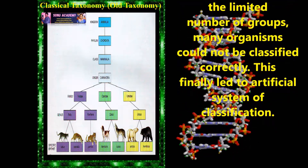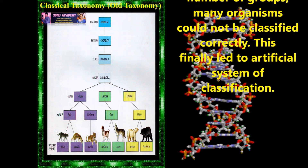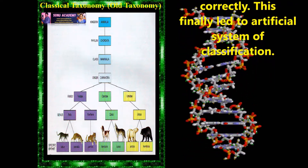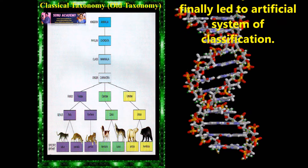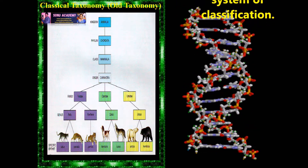Organisms are classified on the basis of some limited features such as root modification, leaf venation, floral structures, number of cotyledons in the case of plants. Due to the limited number of groups, many organisms could not be classified correctly. This finally led to an artificial system of classification.